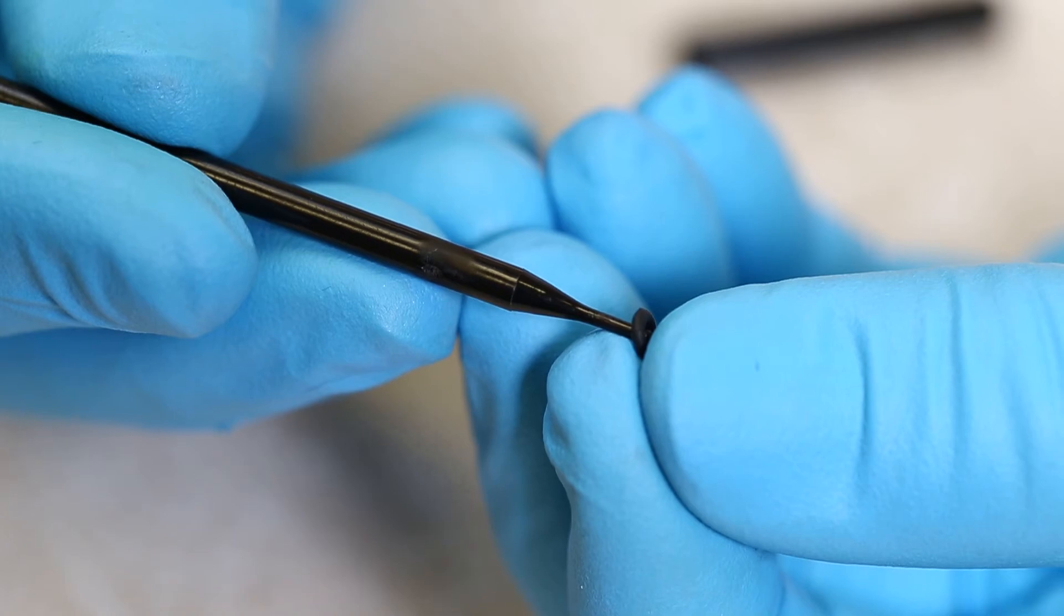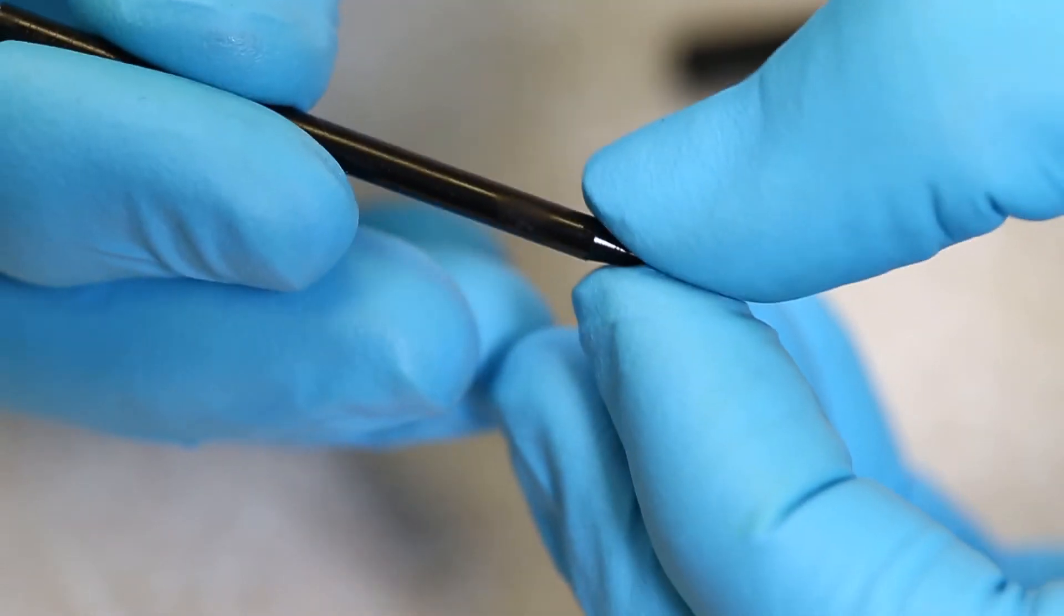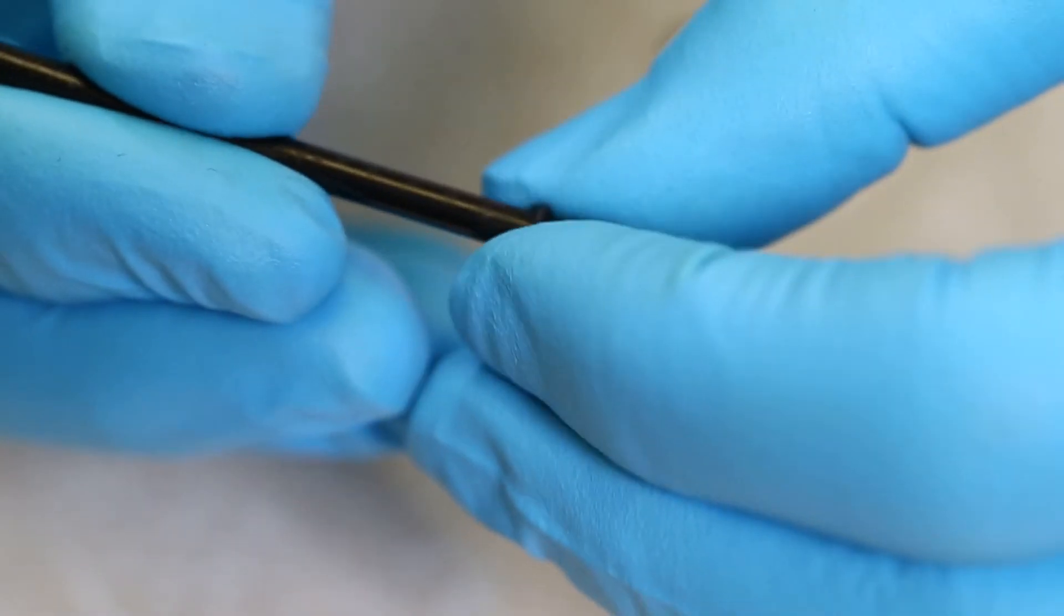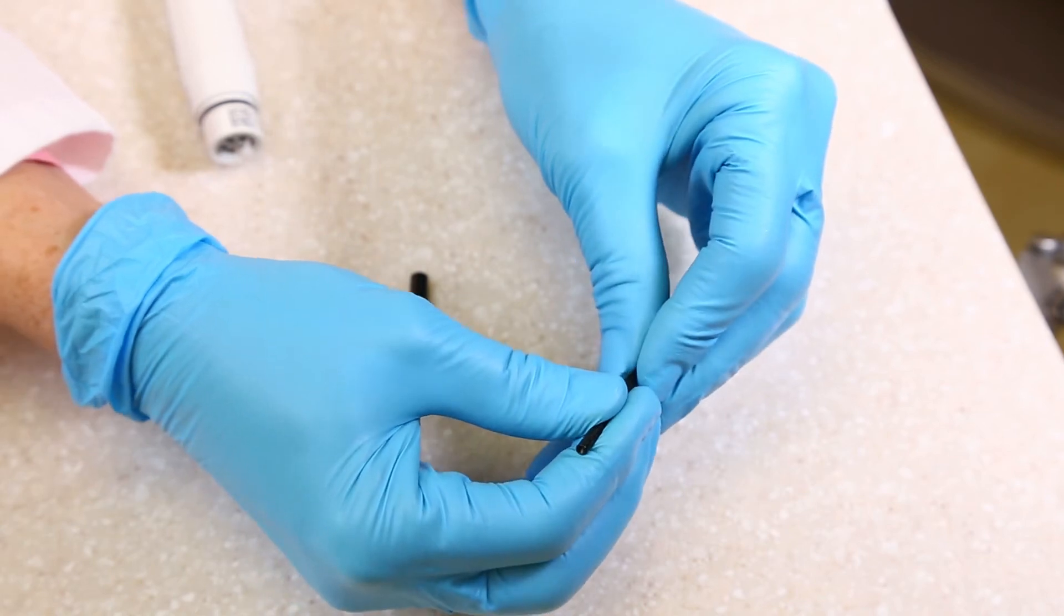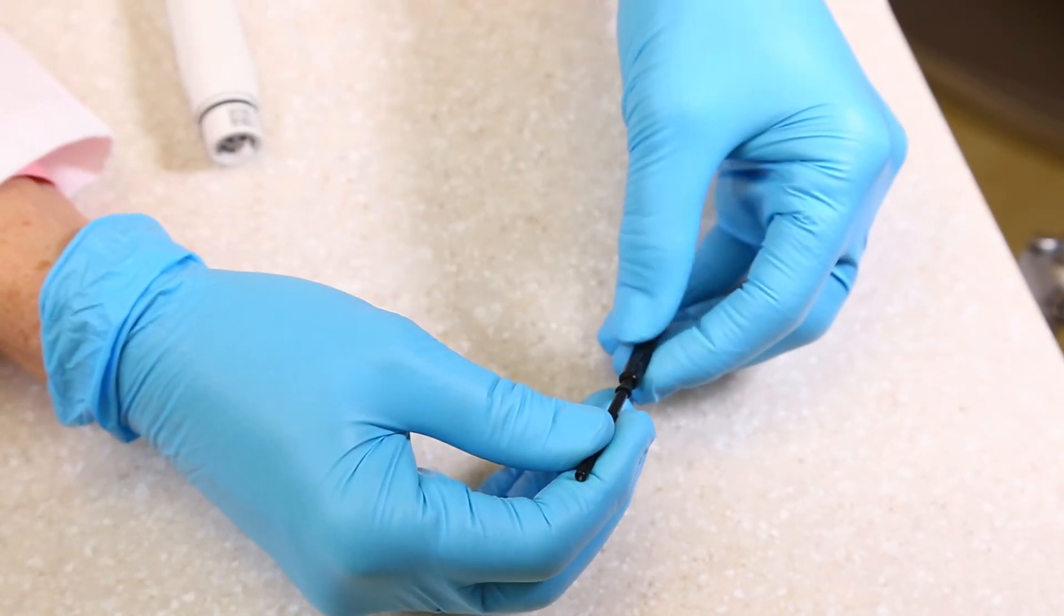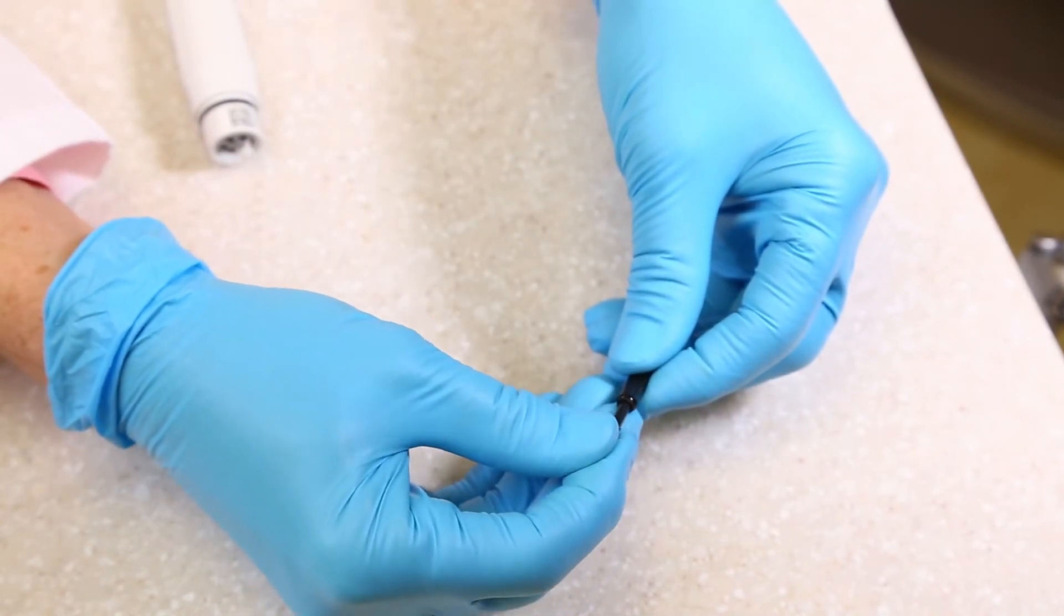Place the new O-ring on the pointed end of the thin plastic rod. Slide the O-ring to within 6 millimeters of the opposite end. A drop of oil may be helpful in sliding the O-ring.